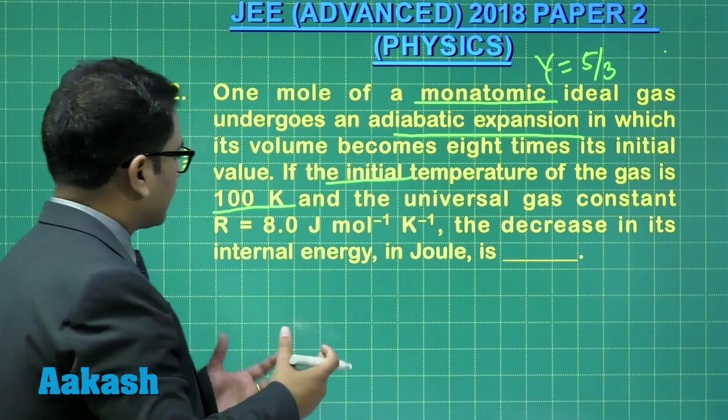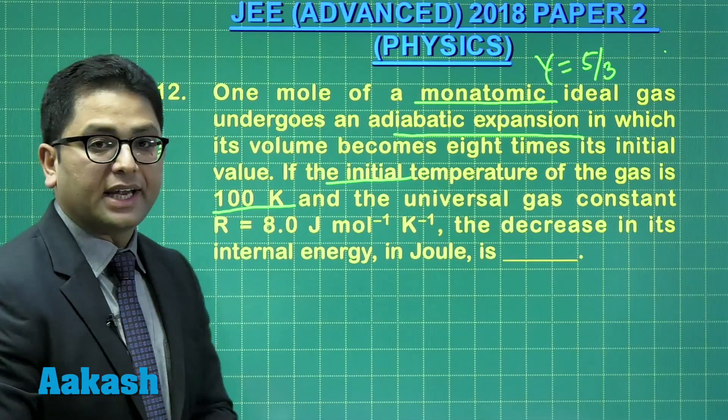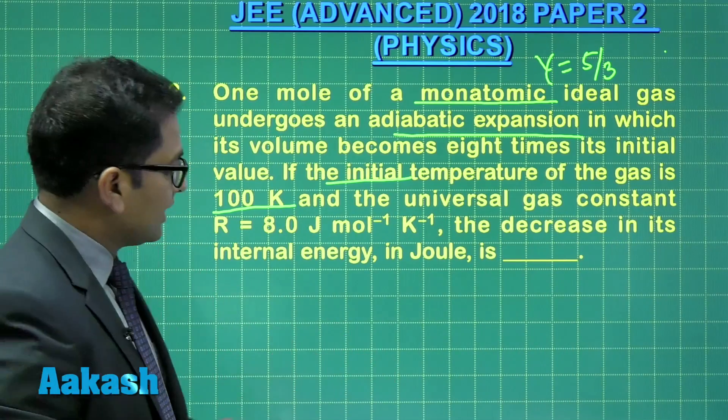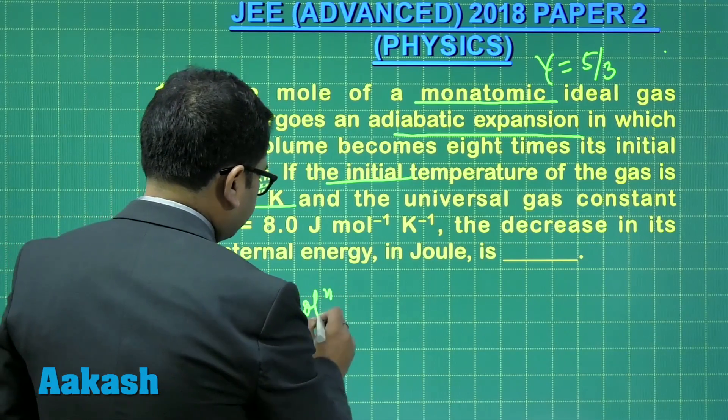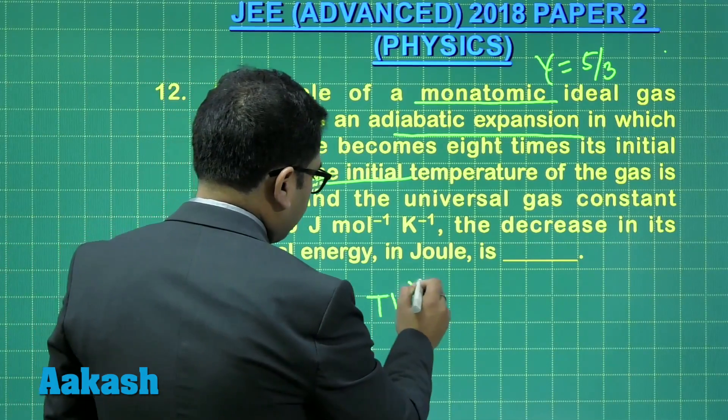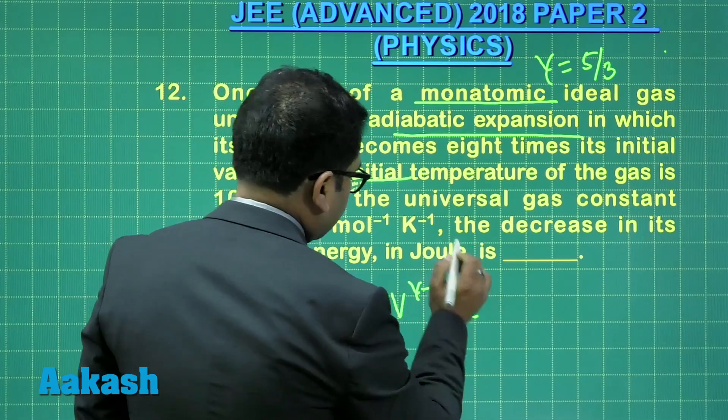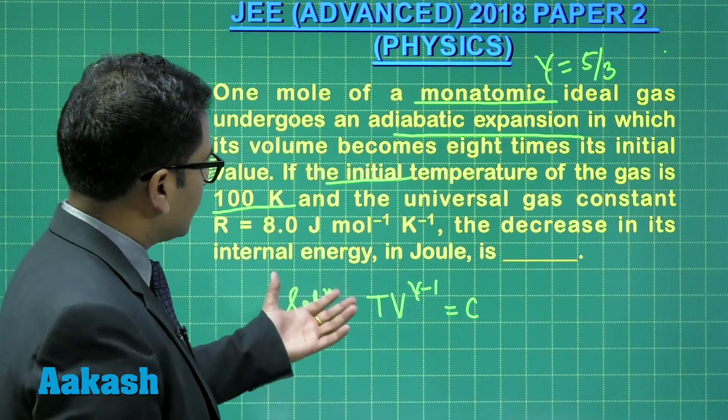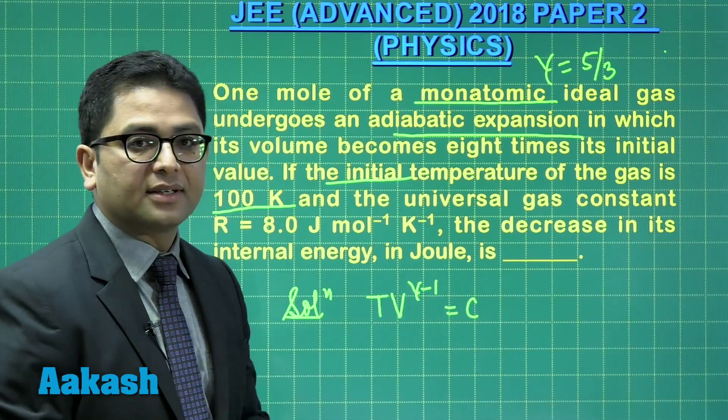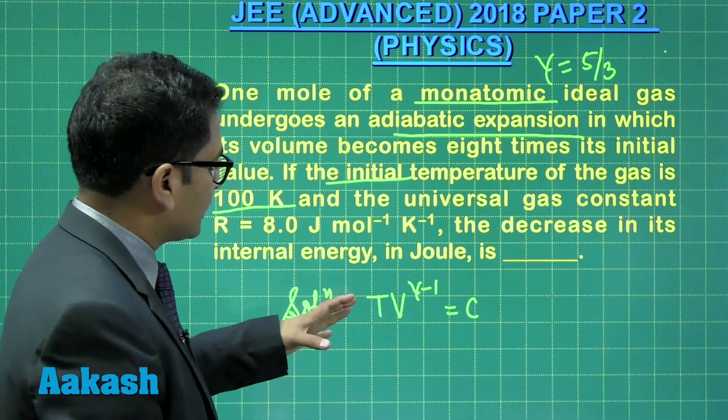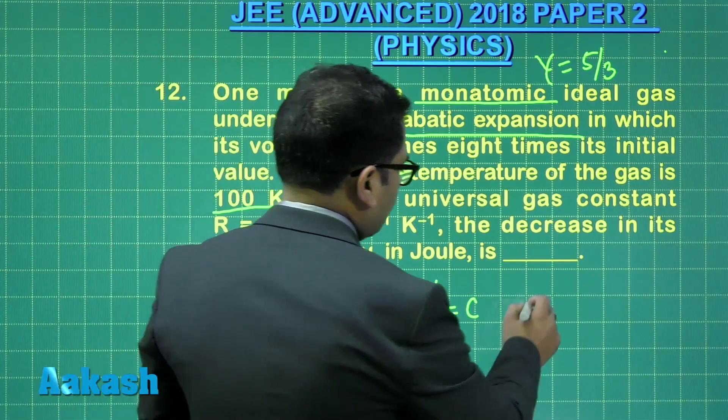And to simplify our calculation, R has been given as 8.0. Let's see. The first thing that we require is T V^(gamma-1) is constant. That's for adiabatic process. Now the initial temperature, initial volume, final volume is given. We can easily calculate the final temperature. And the calculation is also quite simple.